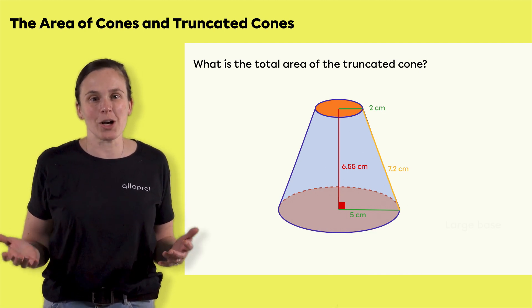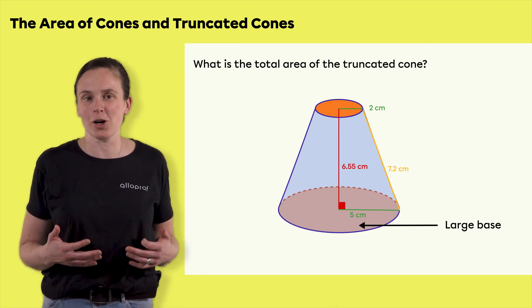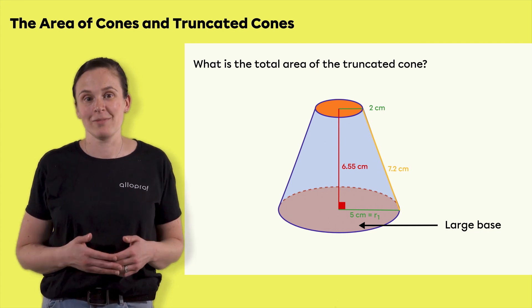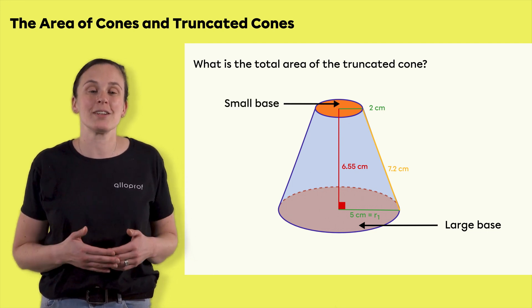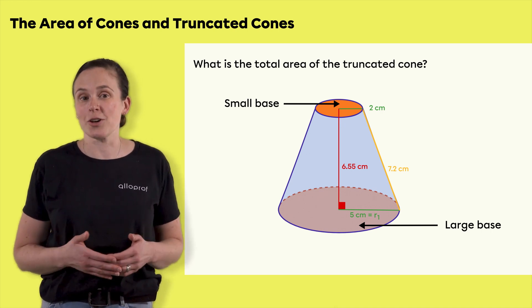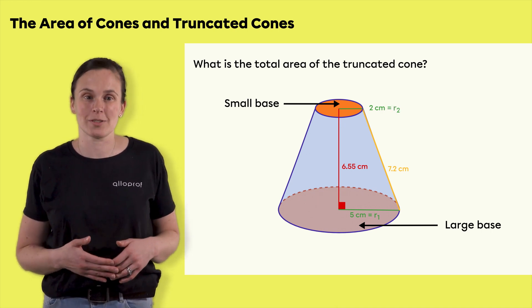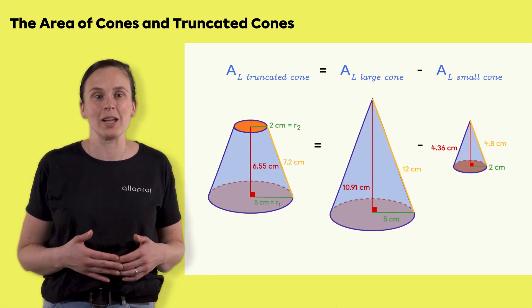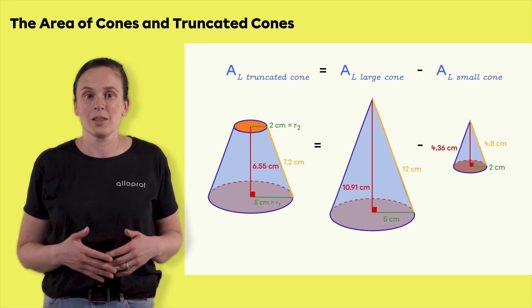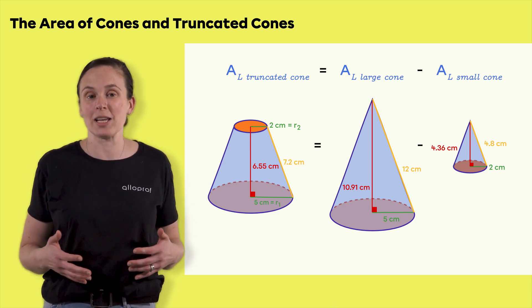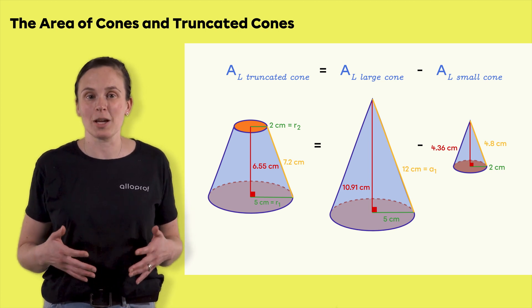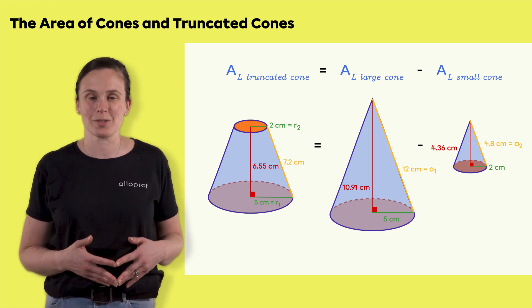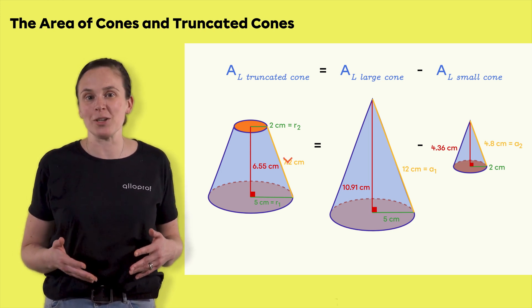The truncated cone's large base corresponds to the large base of the original cone — a circle with radius R1 measuring five centimeters. The small base corresponds to the base of the part that is removed — a circle with radius R2 measuring two centimeters. The apothem of the large cone, denoted A1, measures 12 centimeters, while the apothem of the small cone, denoted A2, measures 4.8 centimeters. The measurement of 7.2 will not be used in this example.